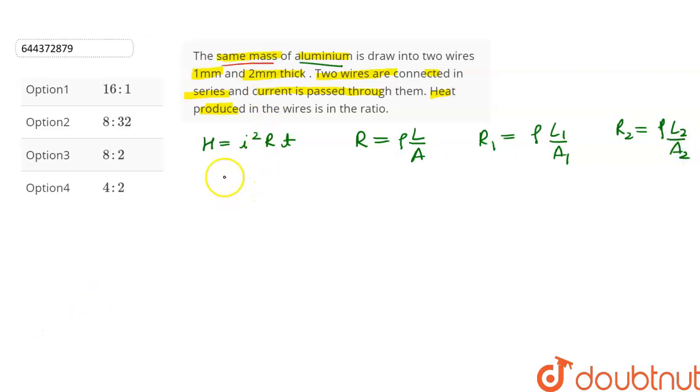The mass of both the wires is same and we know that density ρ = mass/volume. So from here we can write mass = density × volume. The density of both the wires will also be same, so we can write volume will be a constant.